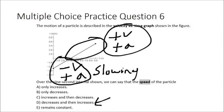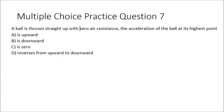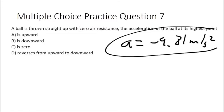Question seven: a ball is thrown straight up with zero air resistance. The acceleration of the ball at its highest point is what? Once it leaves the person's hand, the only net force acting on the object is gravity, which always pulls objects straight down and accelerates them at negative 9.81 meters per second squared. The acceleration due to gravity is always downward. Our answer is B.